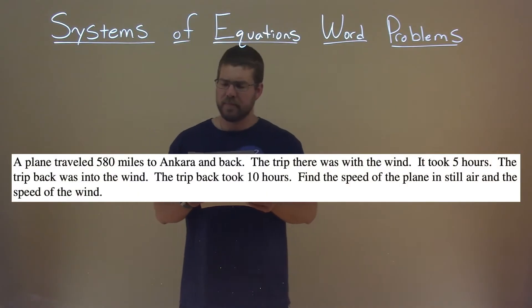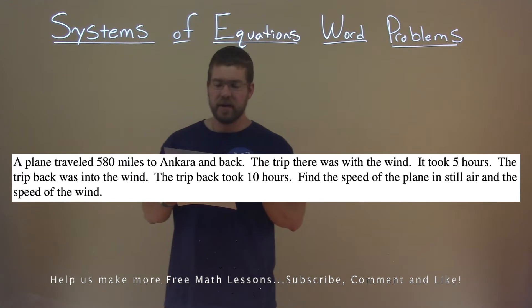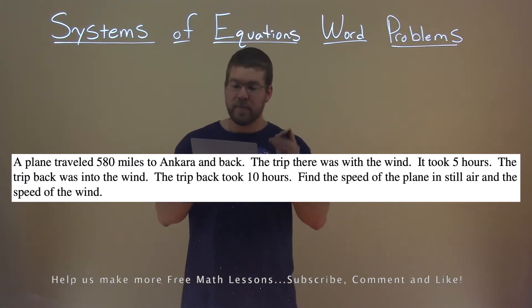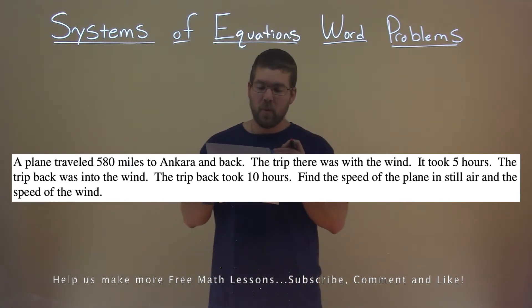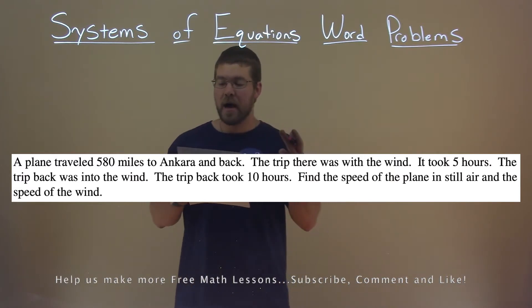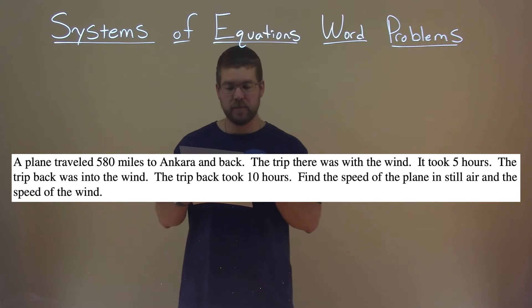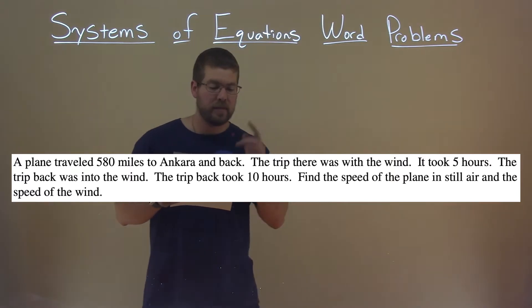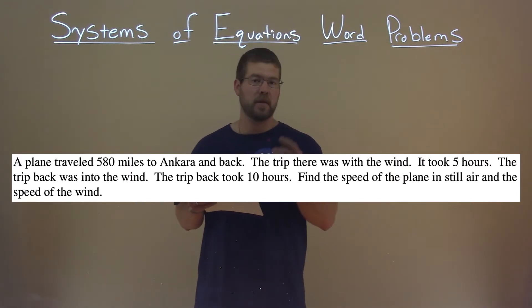We're given this problem right here. A plane traveled 580 miles to Ankara and back. The trip there was with the wind. It took 5 hours. The trip back was into the wind. The trip back took 10 hours. Find the speed of the plane in still air and the speed of the wind.